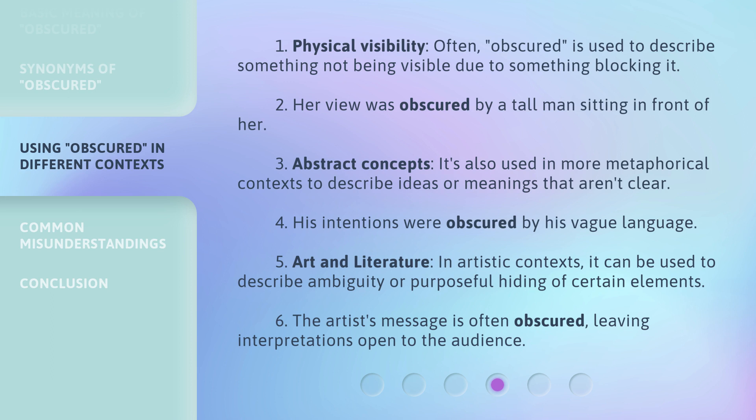Physical visibility: often, obscured is used to describe something not being visible due to something blocking it. For example, her view was obscured by a tall man sitting in front of her. Abstract concepts: it's also used in more metaphorical contexts to describe ideas or meanings that aren't clear. For example, his intentions were obscured by his vague language.